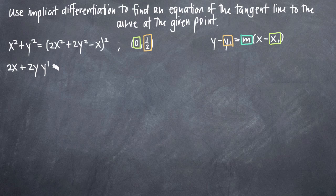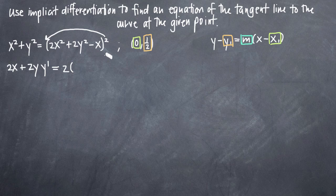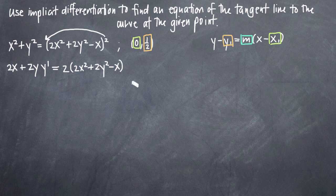Now let's look at the right-hand side. Notice that we have a quantity that's squared, which means we have to use chain rule. We'll bring the 2 out in front and subtract 1 from the exponent. The derivative using chain rule will be 2 times what's inside. The square is the outside function, and 2x² plus 2y² minus x is the inside function. We take the derivative of the outside, leaving the inside completely untouched, giving us 2x² plus 2y² minus x to the first power.